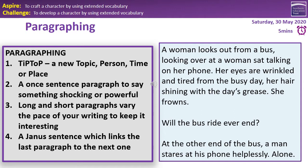You can see here how we've paragraphed our work — it should be very similar to yours. We've kept this one together as it's all talking about the same aspect: one female looking across at another female. 'A woman looks out from a bus, looking over at a woman sat talking on her phone. Her eyes are wrinkled and tired from the busy day. Her hair shining with the day's grease. She frowns.' Then there's a real change — a new topic: 'Will the bus ride ever end?' — a rhetorical question, a one-sentence paragraph, something powerful and shocking. Then 'at the other end of the bus' signals a topic change: 'A man stares at his phone helplessly, alone' — a one-word sentence, but it still links to the man, so it stays within that same paragraph.